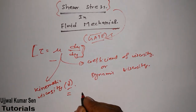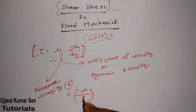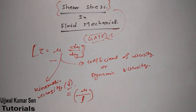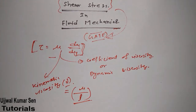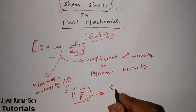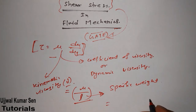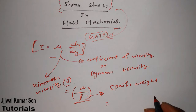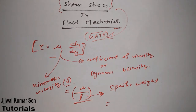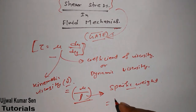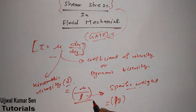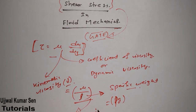Kinematic viscosity equals dynamic viscosity divided by density. In previous GATE questions, they have related kinematic viscosity with density, and also with specific weight — which is weight divided by volume, also written as rho times g — and with specific gravity.